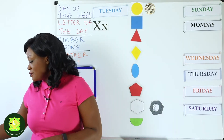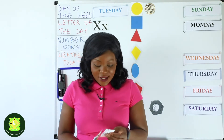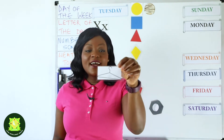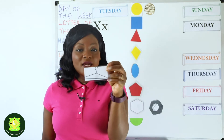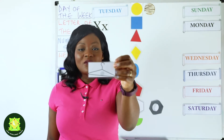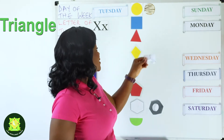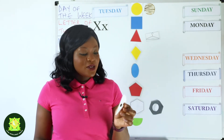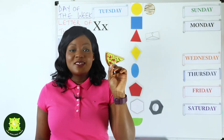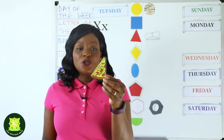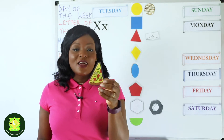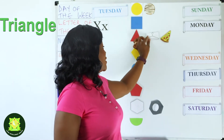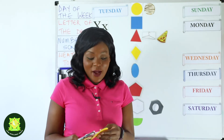Next I have this item that we use to hang clothes — this is a hanger. What shape is the hanger? It's a triangle. Well done if you said triangle. Now this is a pizza slice — it's been cut into what shape? A triangle as well. So that is also a triangle.